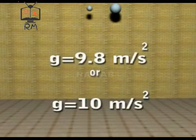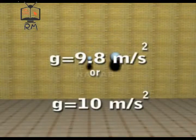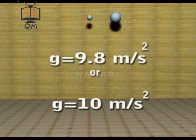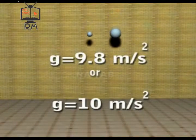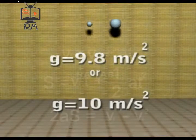This gravitational acceleration is represented by g. Its value is 9.8 meter per second square. But for simplicity, we use the value of g as 10 meter per second square.